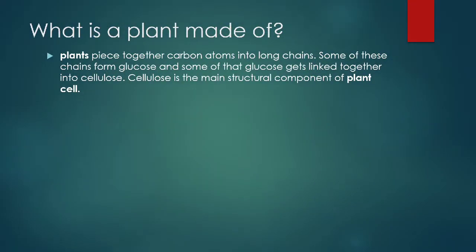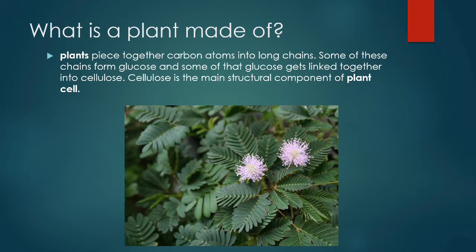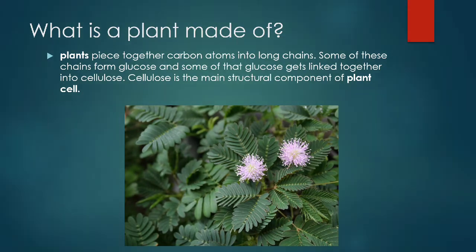What are plants made of? Plants piece together carbon atoms into long chains. Some of these chains have glucose, and some of that glucose gets linked together into cellulose. Cellulose is the main structural component of plant cells.